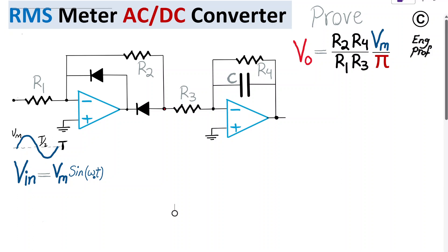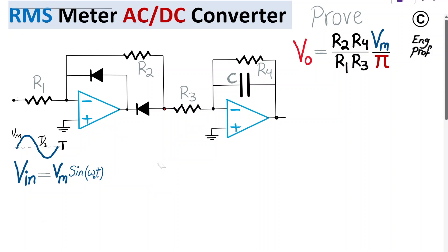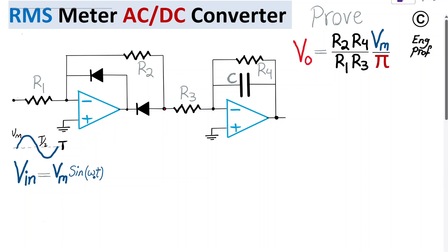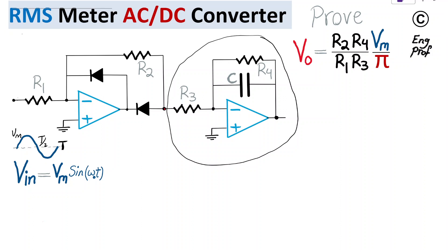An AC-DC converter circuit designed using two ideal op-amps and two diodes is effectively a cascade of two stages. The first stage is a half-wave rectifying amplifier, and the second stage is a low-pass filter amplifier.